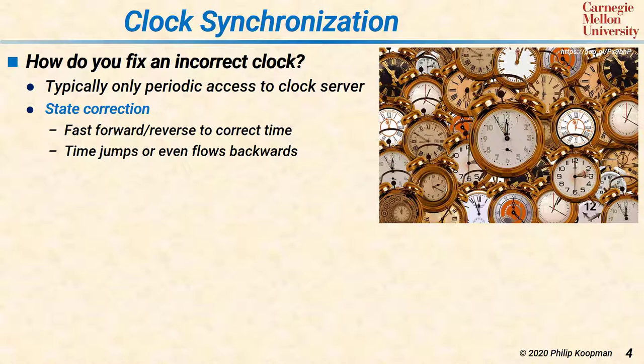State correction is easy to implement, but the problem is that any underlying system operation has just had a potentially huge discontinuity in time. If the system is in standby mode, maybe that's okay. But if there's some sort of control loop, real-time operation, or date-stamped records going on, that state correction can be a problem — especially if you go backwards and have duplication of the same date timestamp at different actual times during execution.